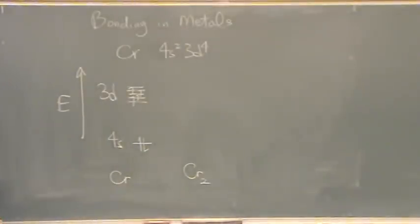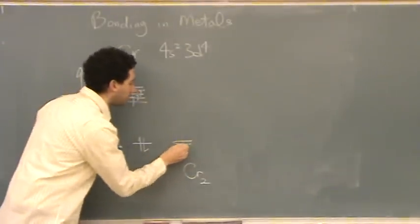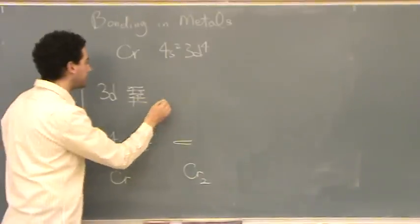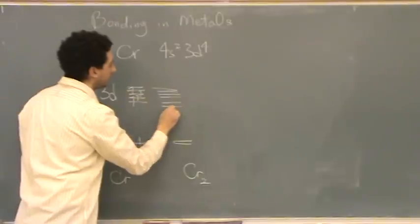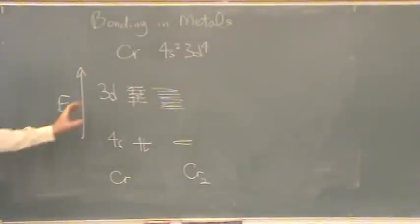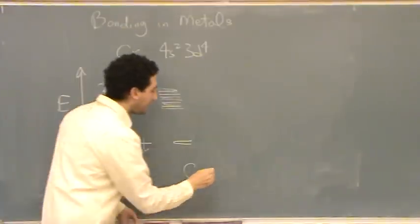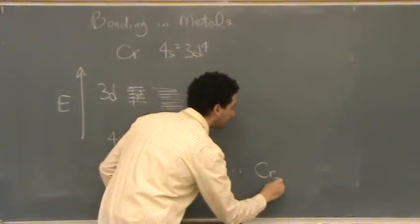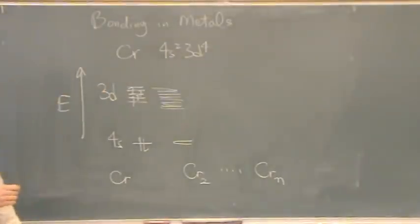Now let's draw two chromium atoms. We're going to make kind of a metallic structure here, and now we've got two 4s orbitals because there's two chromiums, and we've got about ten d-orbitals. And now, let's draw chromium metal, which is, say, n atoms.